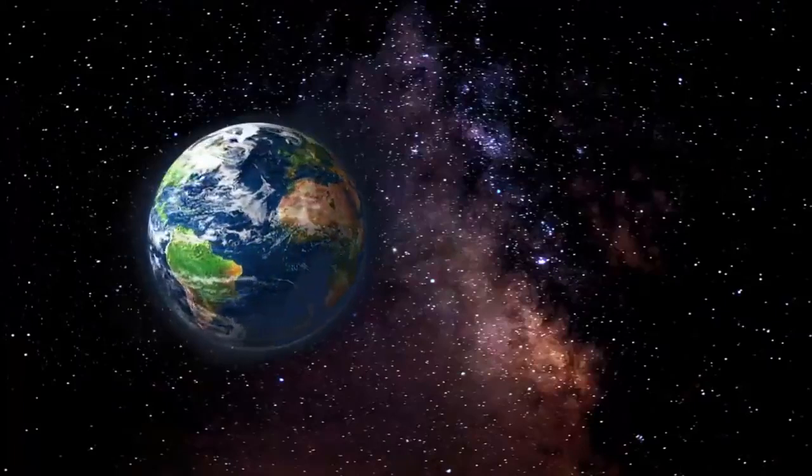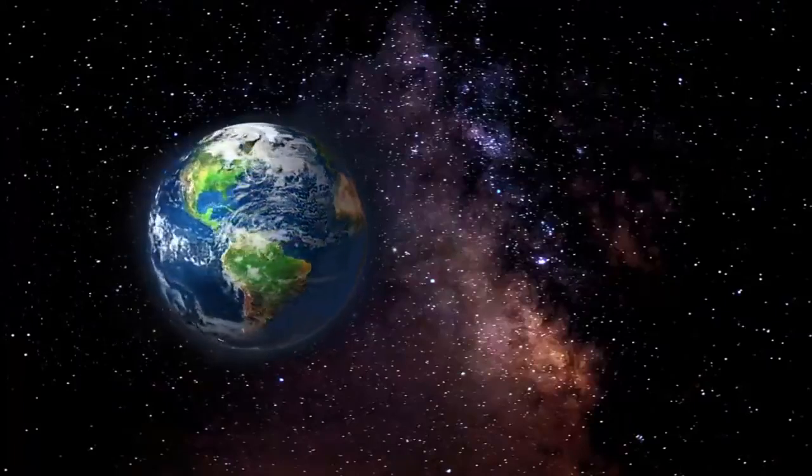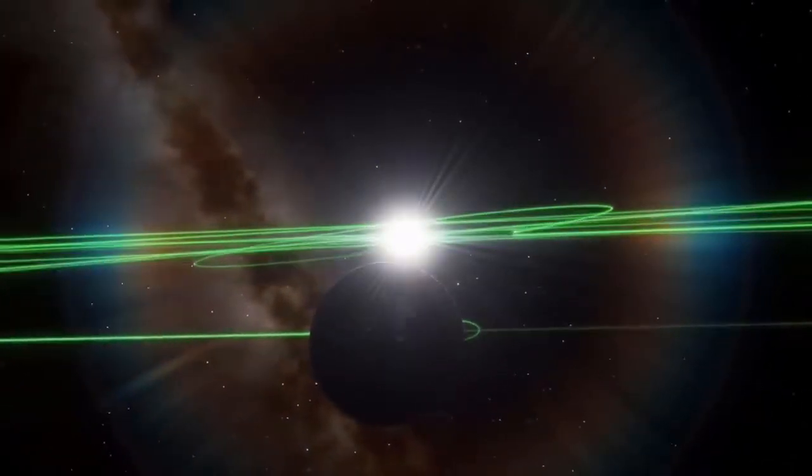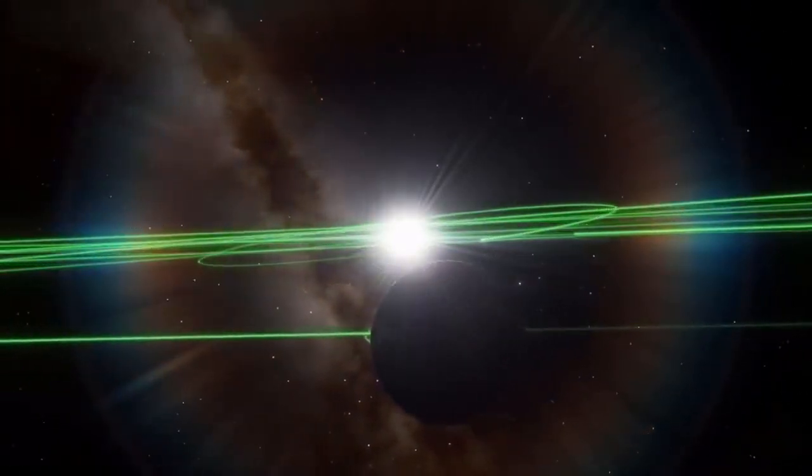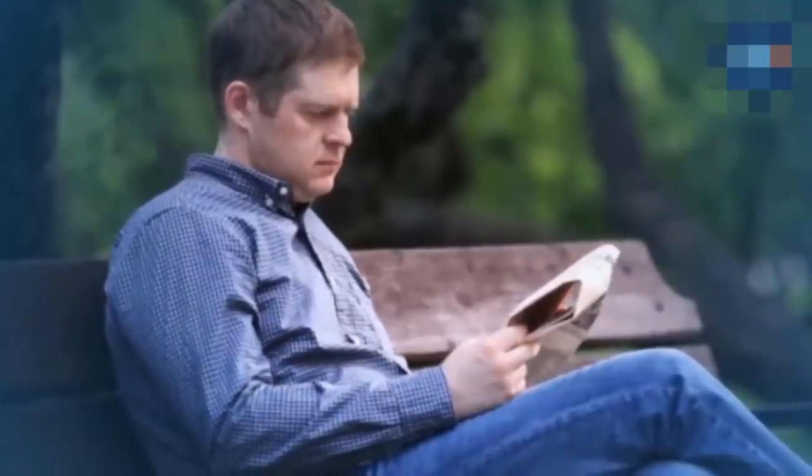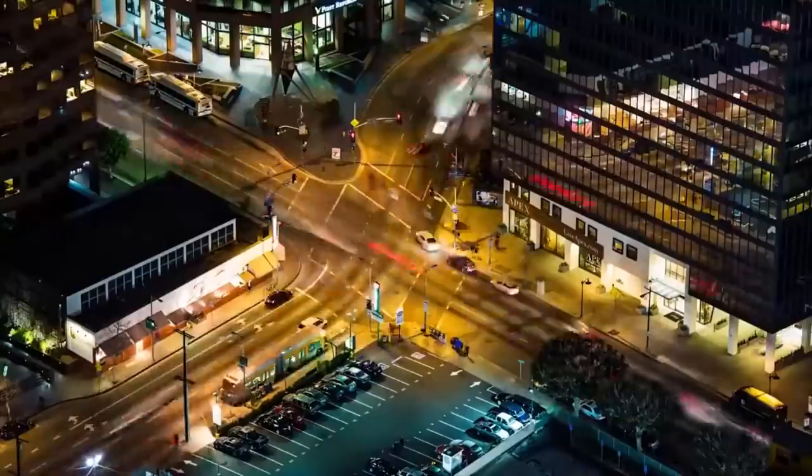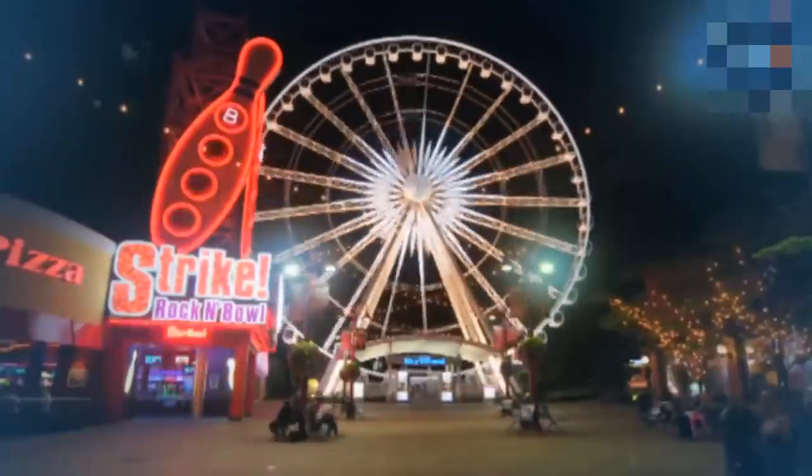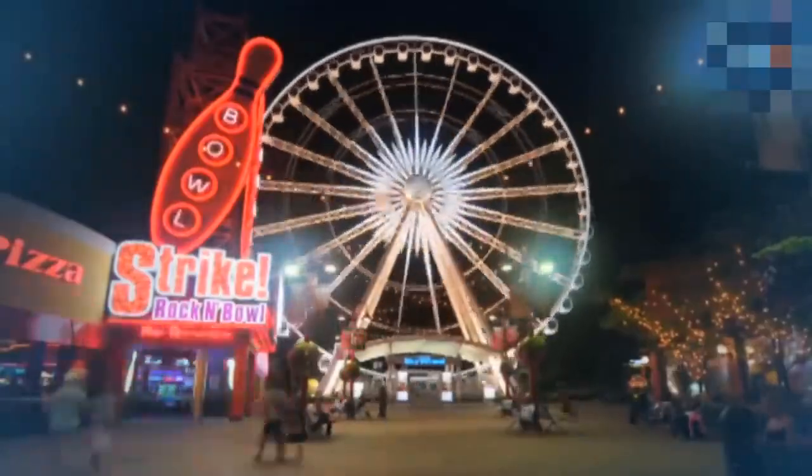Earth moves very fast. It spins, or rotates, at a speed of about 1,000 miles per hour and orbits around the Sun at a speed of about 67,000 miles per hour. We do not feel any of this motion because these speeds are constant. The spinning and orbital speeds of Earth stay the same so we do not feel any acceleration or deceleration.